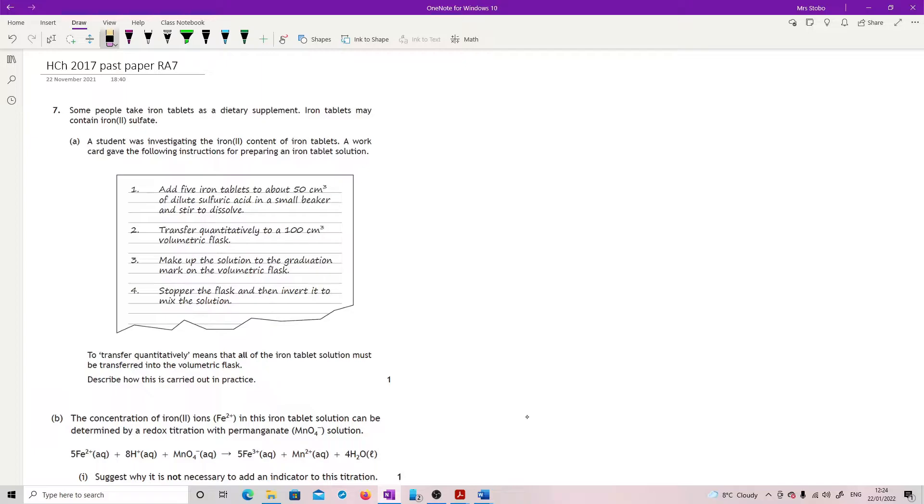A work card gave the following instructions for preparing the solution. Add 5 iron tablets to about 50 cm³ of dilute sulfuric acid in a small beaker and stir to dissolve. Transfer quantitatively to a 100 cm³ volumetric flask. Make up the solution to the graduation mark, stop with the flask and invert it to mix the solution.